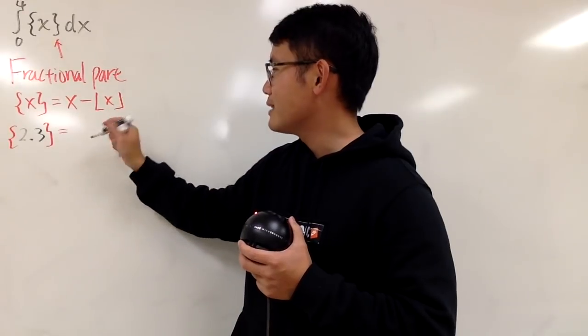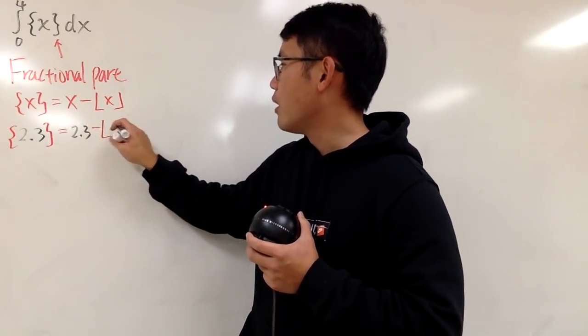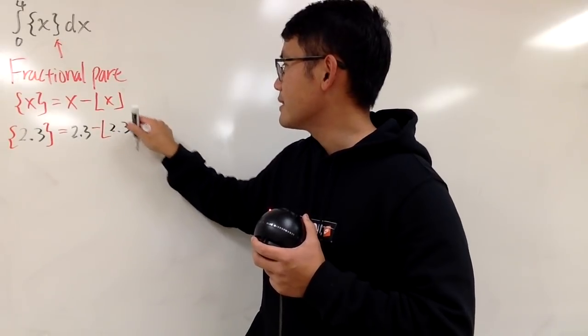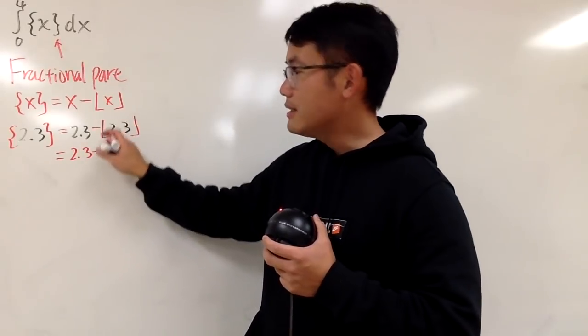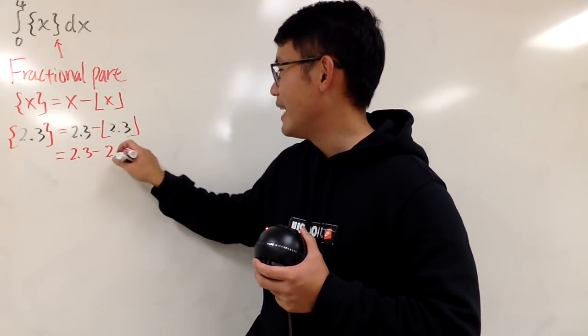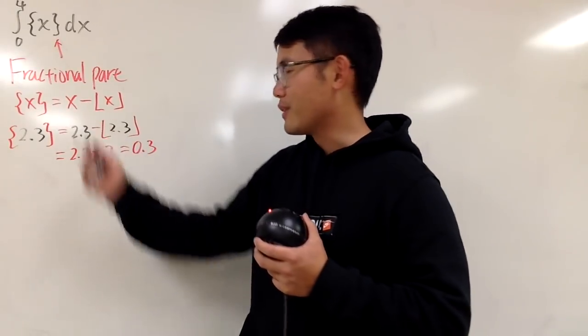You can put down 2.3 into x, right here, and then minus the floor of 2.3, like this. Well, this is, of course, just 2.3, minus this is 2. And of course, you get 0.3, right here. So that's pretty much the answer for that.